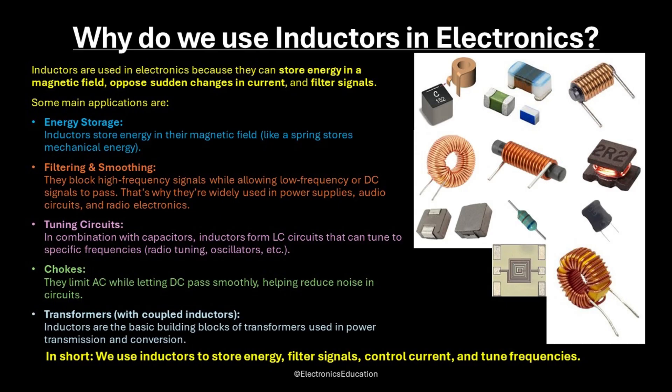2. Filtering and smoothing — they block high-frequency signals while allowing low-frequency or DC signals to pass. That's why they're widely used in power supplies, audio circuits, and radio electronics. 3. Tuning circuits — in combination with capacitors, inductors form LC circuits that can tune to specific frequencies for radio tuning, oscillators, and other applications. 4. Chokes — they limit AC while letting DC pass smoothly, helping reduce noise in circuits.